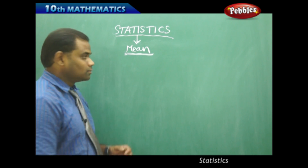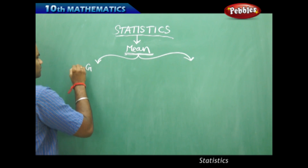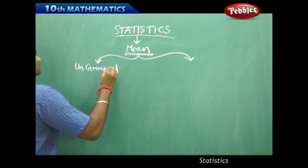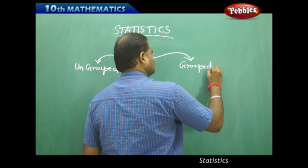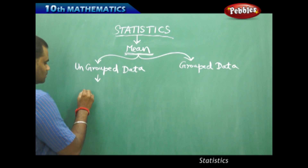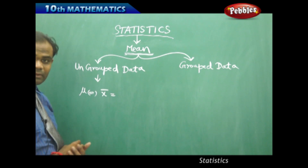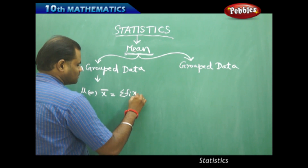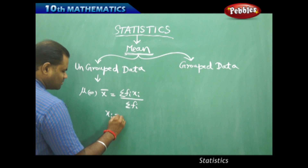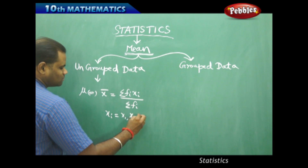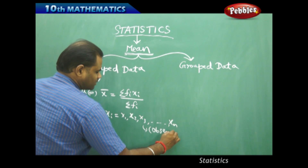There are two types of data. Let's understand the mean for ungrouped data and then the mean for grouped data. Mean, generally denoted by mu or x-bar, is given by the formula σfixi divided by σfi, where xi — that is x1, x2, x3, and so on up to xn — are called observations or the data.